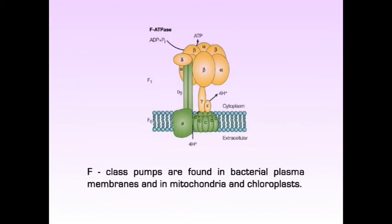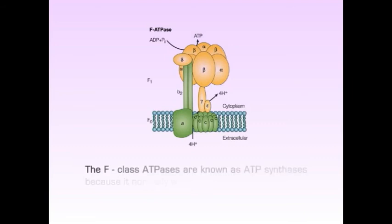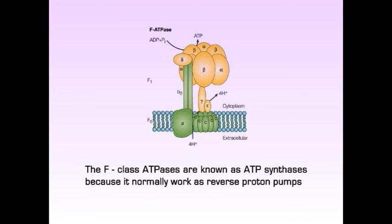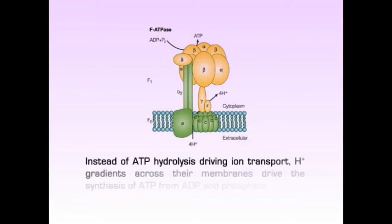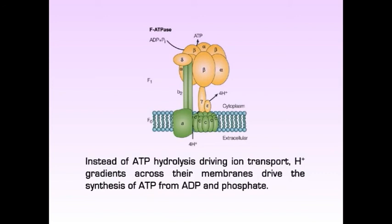F class pumps are found in bacterial plasma membranes and in mitochondria and chloroplasts. The F class ATPases are known as ATP synthases because they normally work as reverse proton pumps — that is, instead of ATP hydrolysis driving ion transport, hydrogen ion gradients across their membranes drive the synthesis of ATP from ADP and phosphate.